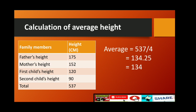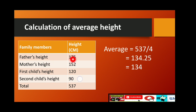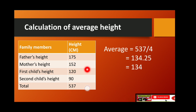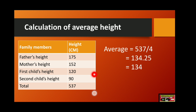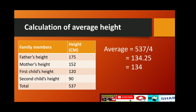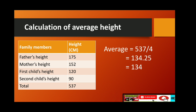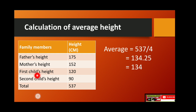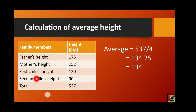The father's height was 175 centimeters, his wife's was 152 centimeters, his first child's height was 120 centimeters, and his second child's height was 90 centimeters. These measurements are represented in a table showing family members and their heights in centimeters. The total height of the family is 537 centimeters.